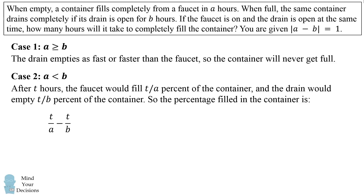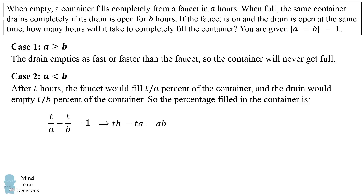Now we want to solve for when the container is completely full — 100 percent, which equals 1. So we solve this equation to be equal to 1. We do this by multiplying both sides of the equation by AB. We then end up with TB minus TA equals AB. We can then factor out the T and divide by B minus A to get T equals AB divided by the quantity B minus A.